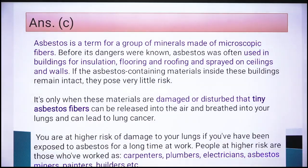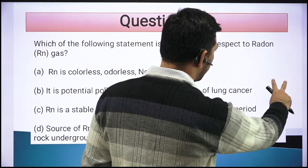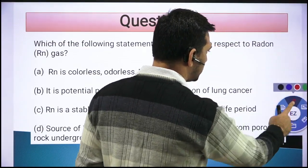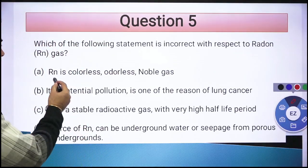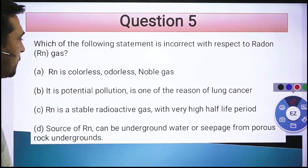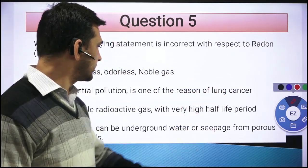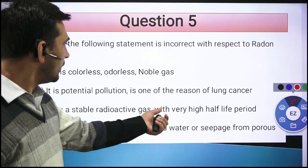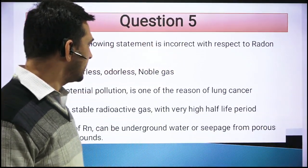The fifth question asks about radon gas. You need to know its properties to answer. Radon is a colorless, odorless, noble gas. It is a potential pollutant and one of the reasons for lung cancer. Statement C — that it is a stable radioactive gas with a very high half-life — is incorrect. The correct answer requires identifying that incorrect statement.